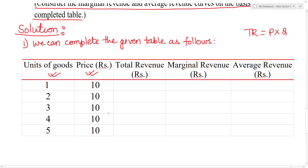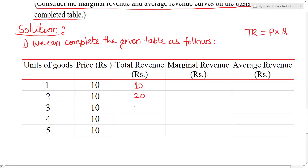So we multiply: 1 into 10 equals 10, 2 into 10 equals 20, 3 into 10 equals 30, 4 into 10 equals 40, and 5 into 10 equals 50.